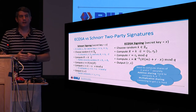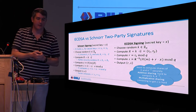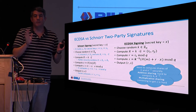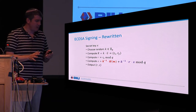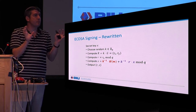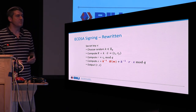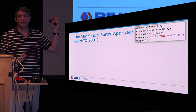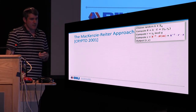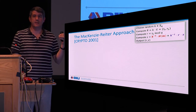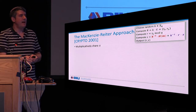In the mid-90s there was work on this for the multi-party setting with an honest majority by Langford and then by Gennaro, Jarecki, Krawczyk, and Rabin. I'm going to focus on the two-party setting where there is obviously no honest majority. McKenzie and Wright were the first to provide a protocol for the two-party case, 16 years ago here at Crypto.